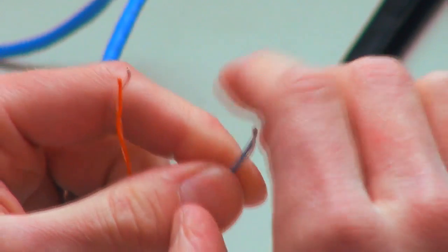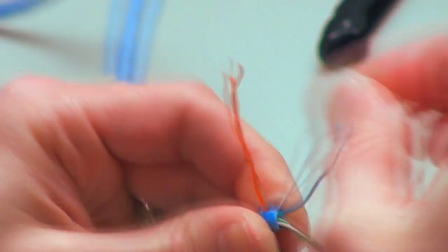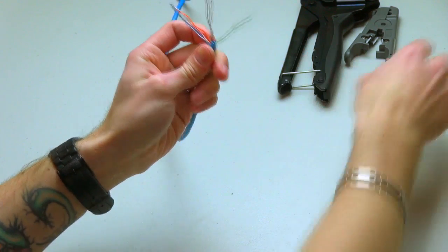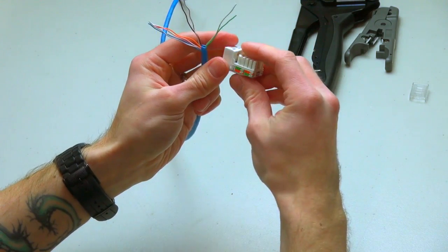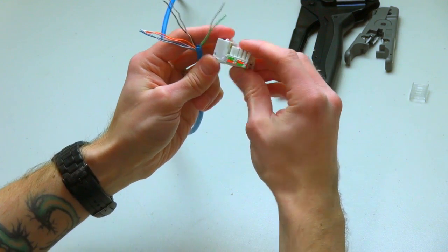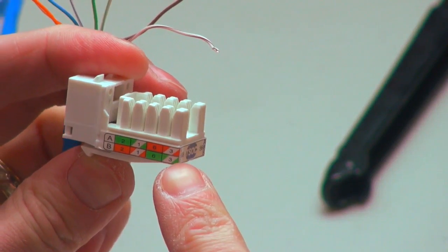Step 3: Separate and straighten each pair of the UTP cable and lace into the Cat6 RJ45 110 type Keystone module according to the required wiring code.